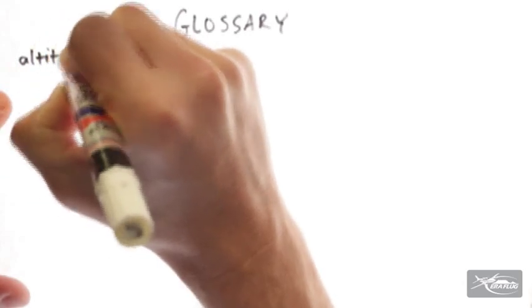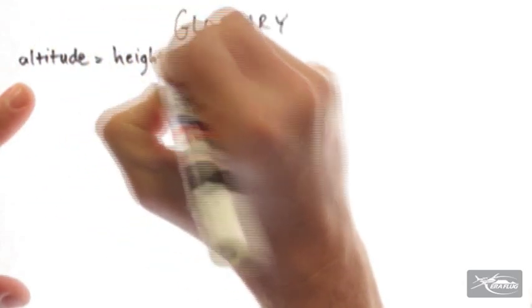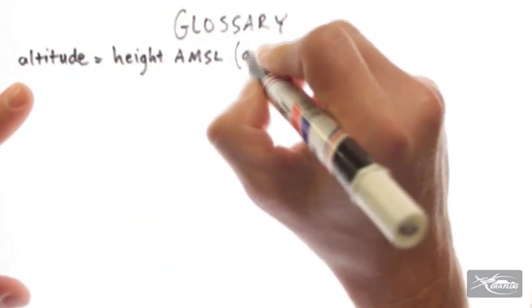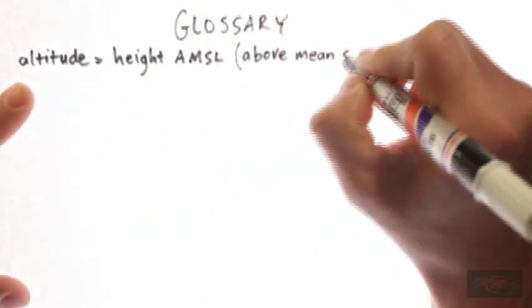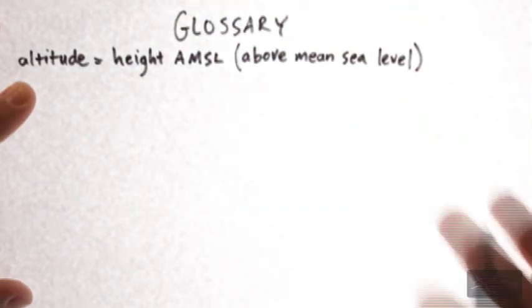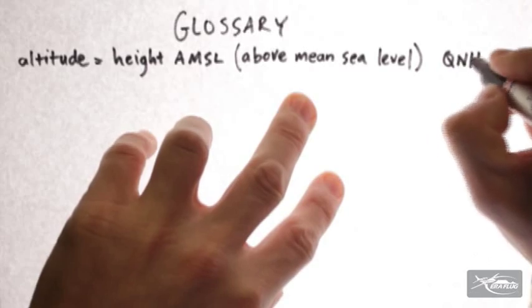And for our calculations, let's look at some glossary terms. The first one is altitude, which is a measure of your height above mean sea level. We measure that by means of the QNH.